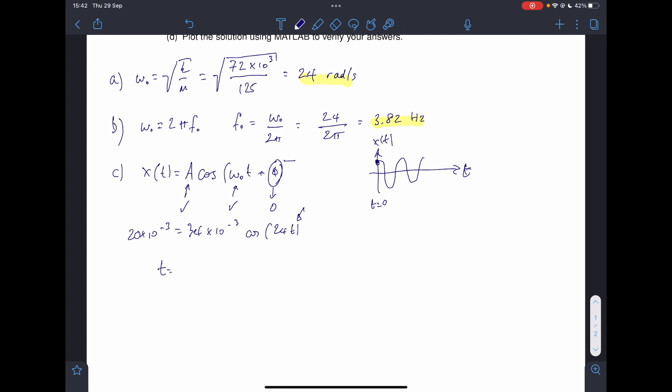T is going to be the inverse cosine of 20 divided by 34, all divided by 24. And if you do that sum, sorry, 20 divided by 34, well, there's a 10 to the minus 3 on top and on the bottom, so they disappear. Divided by 24, that equals 0.0392, I believe.